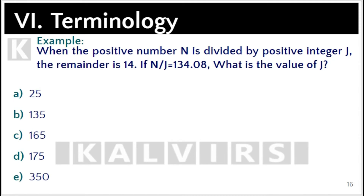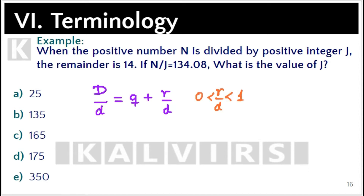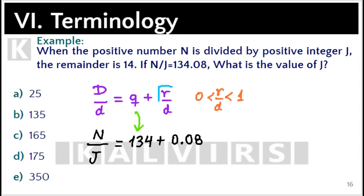When the positive number n is divided by the positive integer j the remainder is 14. If n over j equals 134.08, what is the value of j? We apply the formula: the dividend over the divisor equals the quotient plus the remainder over the divisor. Here the dividend is n, the divisor is j, and n over j equals 134.08, which is 134 plus 0.08. So 134 is the quotient and the remainder over the divisor equals 0.08.